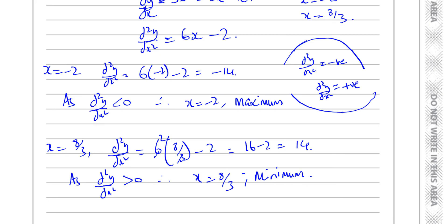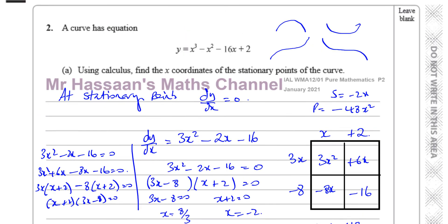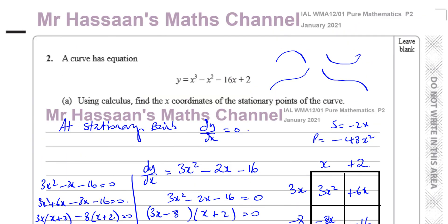That's the answer to this question — justified by further calculus the nature of all the stationary points. So we've finished question number 2, which is all about the applications of differentiation. Other questions from this January 2021 paper can be found in this playlist, as well as questions from this topic of differentiation and its applications from P2. Subscribe to my channel and check the card at the top for another past paper for P2. Thank you for watching and see you soon.